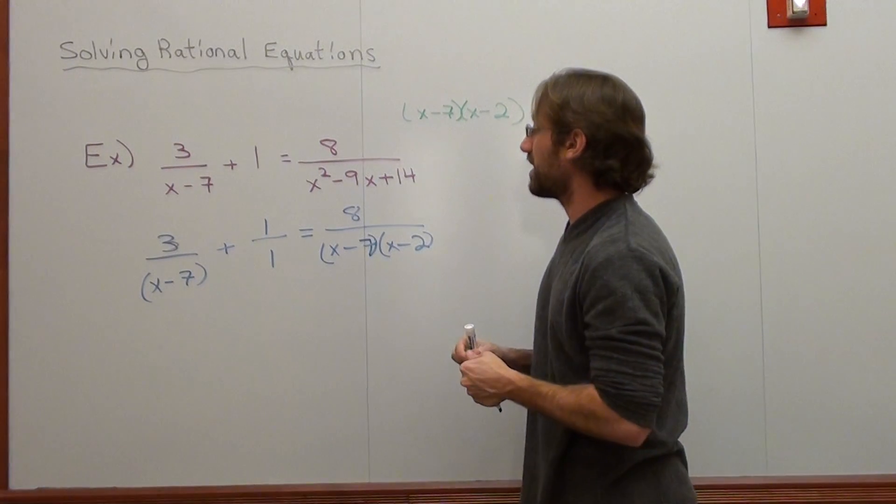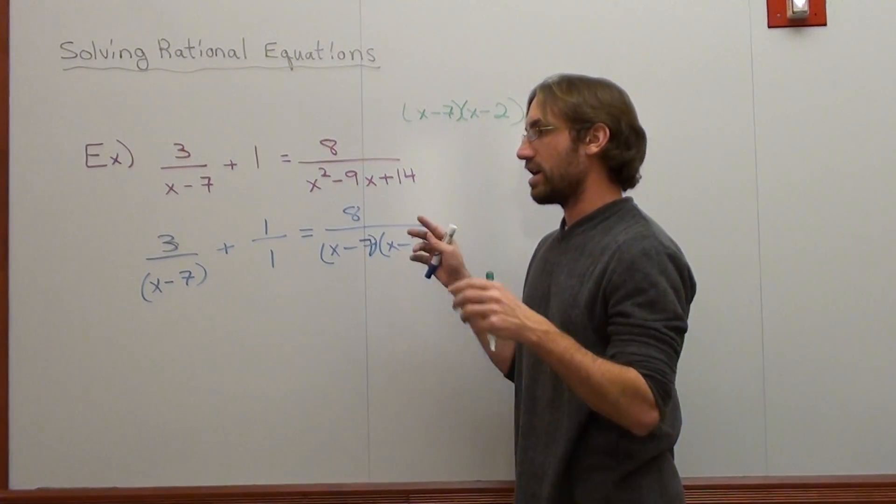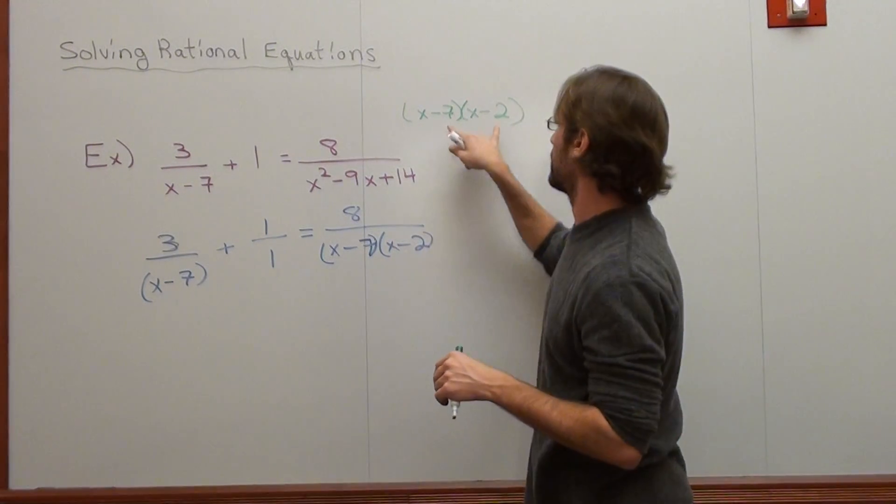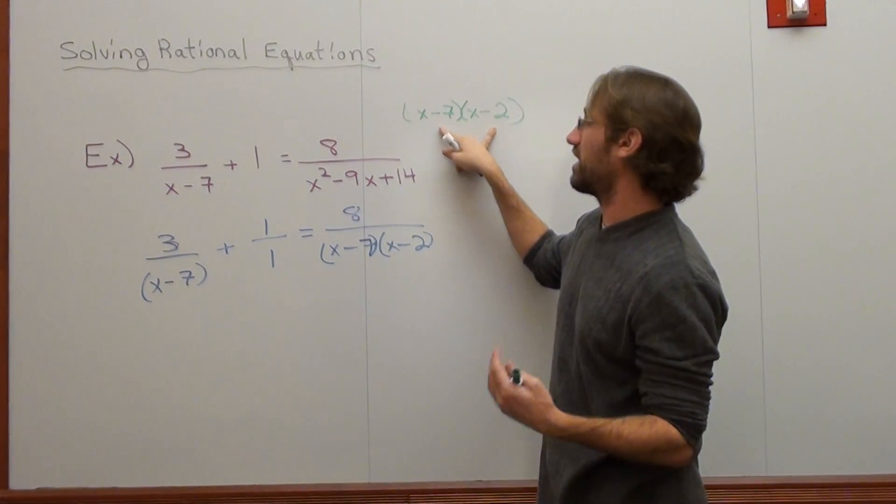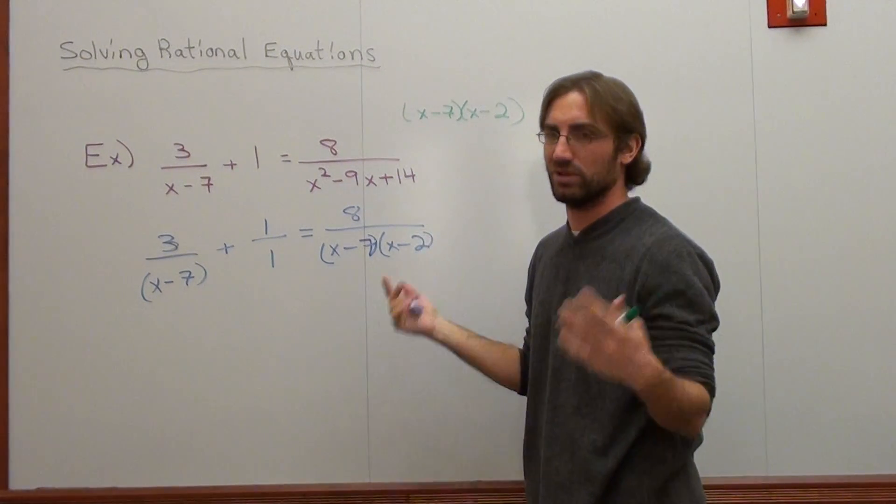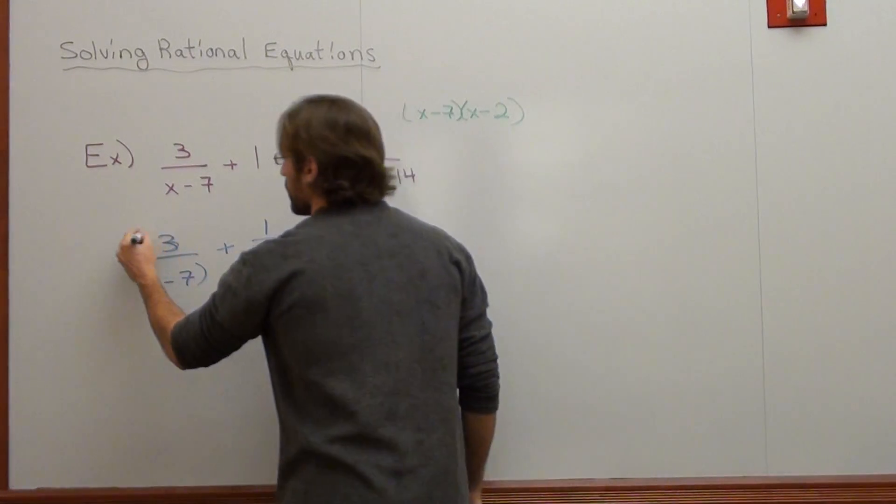So what I'm going to do is I'm going to multiply this equation by what will cancel out all the denominators, and that's the LCD, which is x subtract 7 and x subtract 2, or the least common multiple. So that's what I'm going to do.